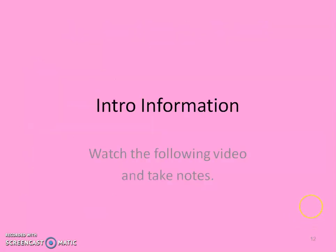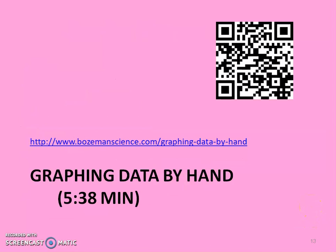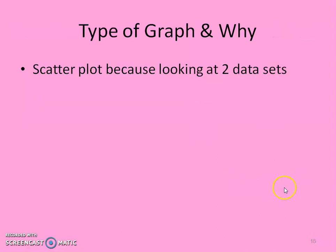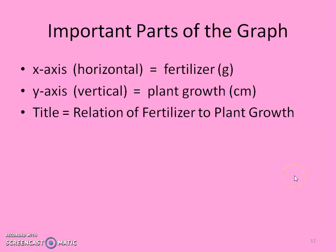You should have also watched that intro information on graphing data by hand. He talked about graphing data according to fertilizer in grams and plant growth. He talked about those independent and dependent variables and why they are the way they are. Then he said, looking at our data, how are we going to graph this and why? He said a scatter plot would probably be the best because it involved two data sets. He also talked about the important parts of the graph and where things would go.